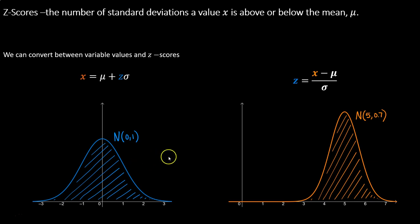If I traveled one standard deviation above the mean on the blue curve, I would land at 1 — starting at 0 and traveling to the right 1. On the orange curve that's not the same thing. If I start at the mean 5 and travel to the right 0.7, which is one standard deviation, I land at 5.7. That means the raw data value 5.7 is one standard deviation away from the mean and has a z-score of 1. So the 1 from the blue curve and the 5.7 from the orange curve are related because they're the same relative distance from the mean.